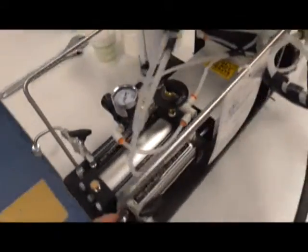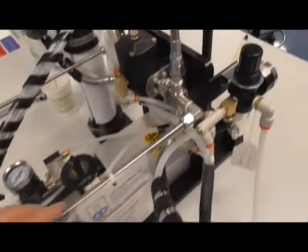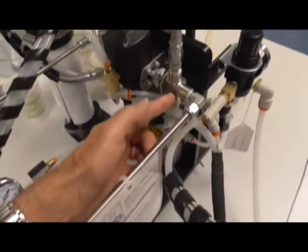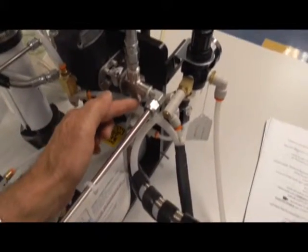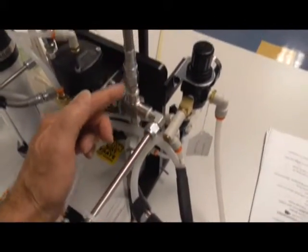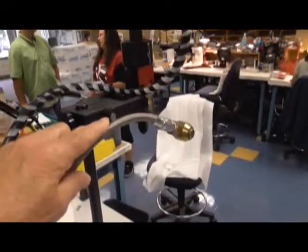When the machine goes into the dispense mode, this cylinder, this switch rotates. Material flows in, is blocked here, and material flows out to the mixed dispenser.